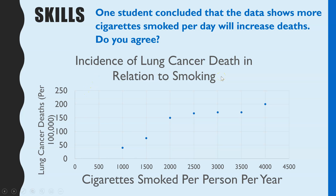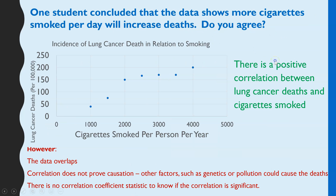The example I'm linking to shows the incidence of lung cancer deaths in relation to smoking — how many people with lung cancer have died per 100,000 people, against cigarettes smoked per person per year. From this, a student concluded that the data shows the more cigarettes smoked per day will increase deaths. Whenever you're given a student's conclusion and asked 'do you agree?', that is an evaluate question. So you have to use evidence from the graph that supports the conclusion and anything that doesn't. The main piece of supporting evidence is there is a positive correlation between lung cancer deaths and cigarettes smoked per year, which does support the student's conclusion.